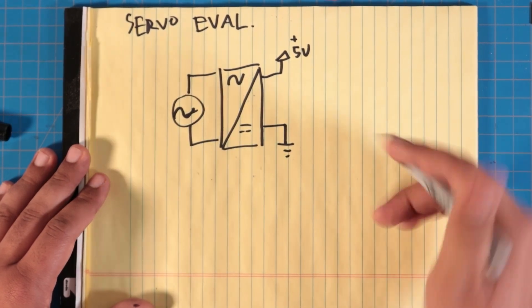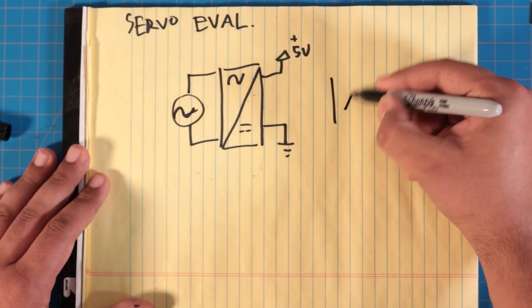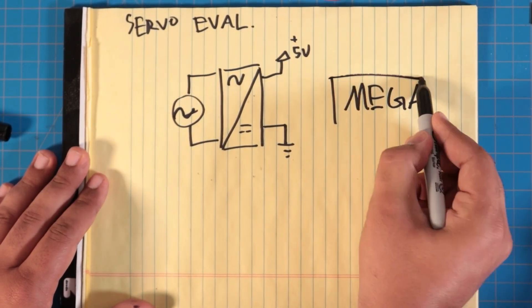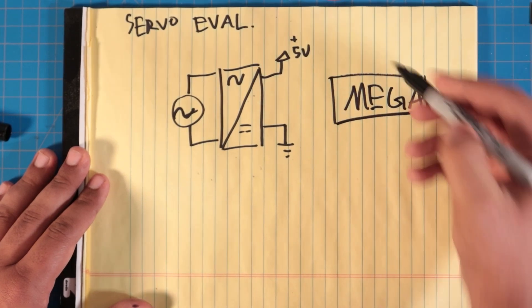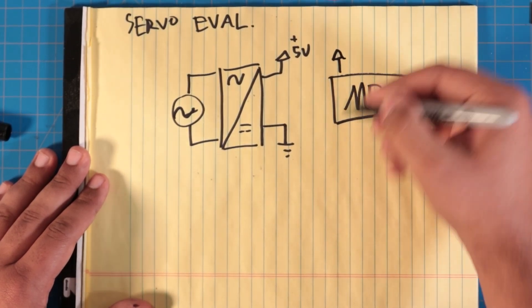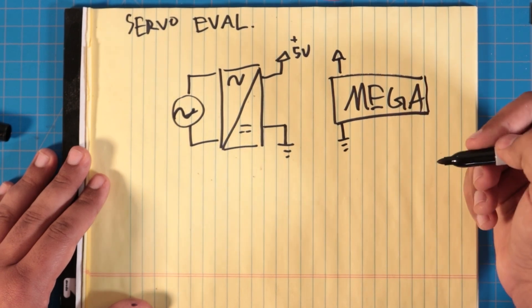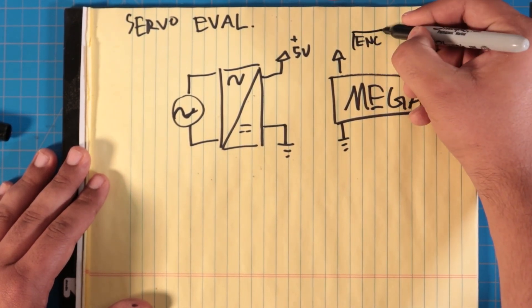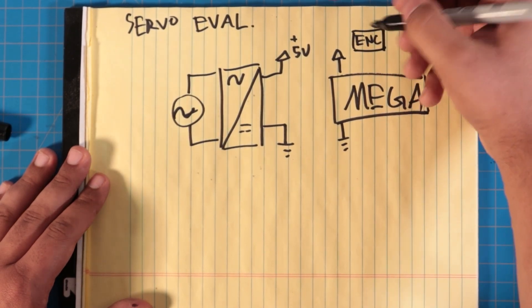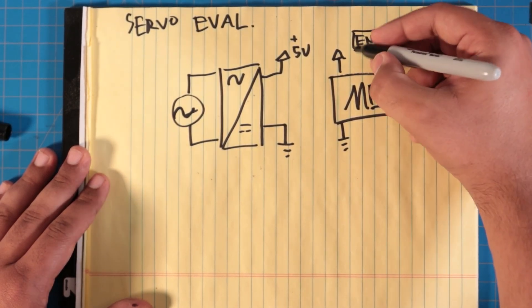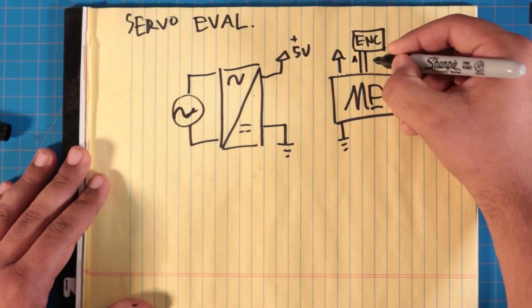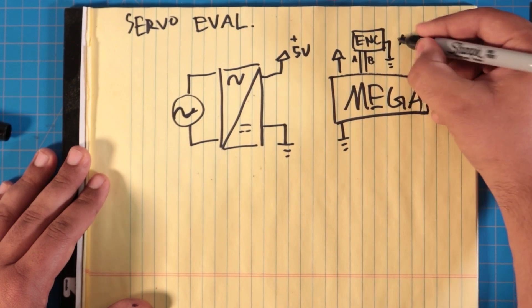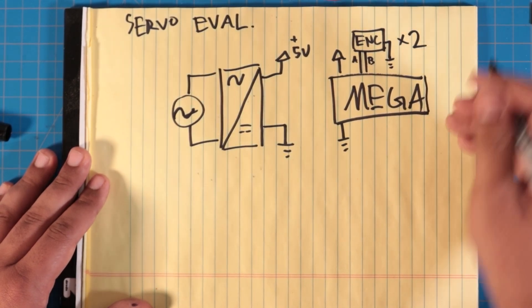We've got our Arduino Mega. Mega Arduino, so big. Also needs that VCC coming in. This will connect to an encoder, which I'm disappointed there's not really a standard encoder symbol, but whatever. So we've got two channels, A and B, and then also a ground connection. I'm just going to draw it times two, because I'm not going to draw it twice. You get the idea.